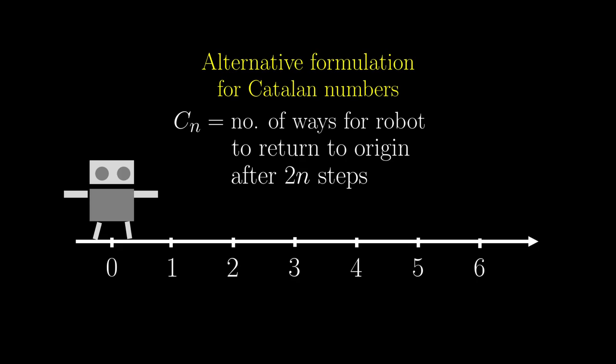If after 2n steps, it goes back to the origin, the number of ways the robot could do this is the Catalan number.